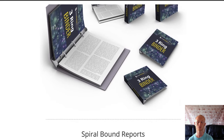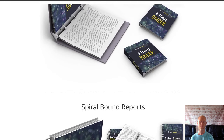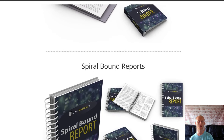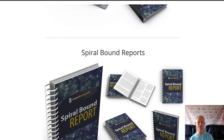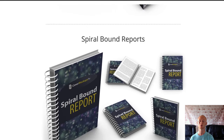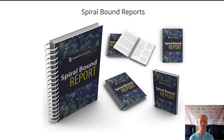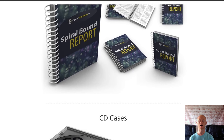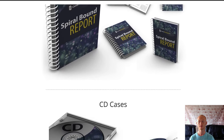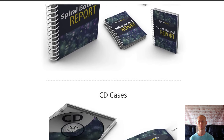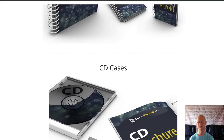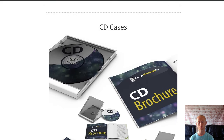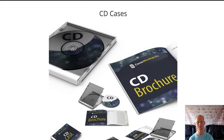OTO1 is priced at a very low $47 and it's going to give you 200 more mockups in 4 new categories: group bundles, real world mockups, video mockups, hands holding devices and more. One time offer number two is priced at $24.95 and it's the fully editable 2D e-book covers template bundle.